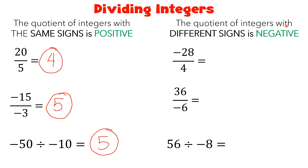The quotient of integers with different sign must be negative. Like here: negative 28 divided by 4. So they have different signs — 28 is negative, 4 is positive. So when you divide them, 28 divided by 4, you will have an answer of 7. Then you will copy the negative sign, so it will be negative 7.